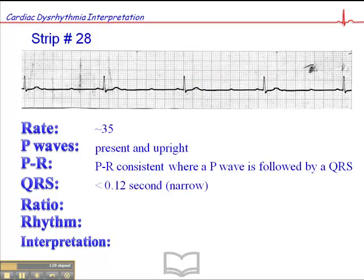The QRS is narrow, less than 0.12 seconds. The ratio is 3 to 1 — so we have a P wave here, a P wave here, and a third P wave there. And again, we see the pattern repeated: P wave, P wave, P wave.